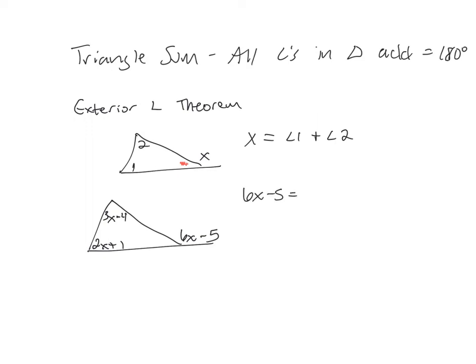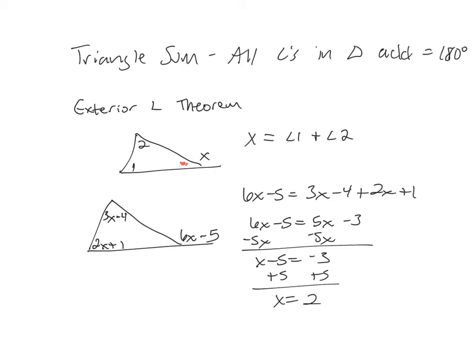So there's no way to figure out this angle and do anything with 180, so you'd have to do 6x minus 5 equals 3x minus 4 plus 2x plus 1, and then solve that. So 3x and 2x is 5x, negative 4 and 1 is negative 3, and x equals 2.